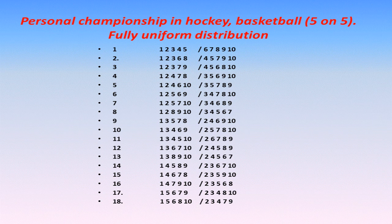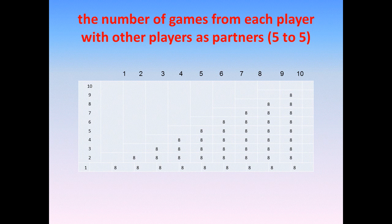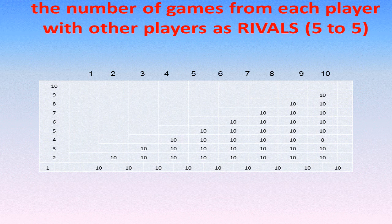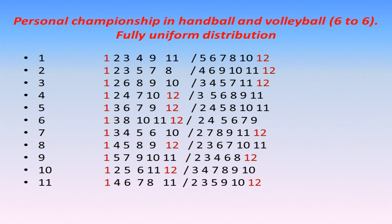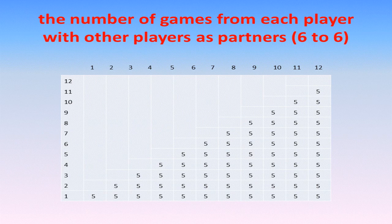You can see a completely uniform distribution for handball, mini football, basketball, hockey, and volleyball. It is shown in the diagrams that the distribution of players is completely uniform across all these sports.